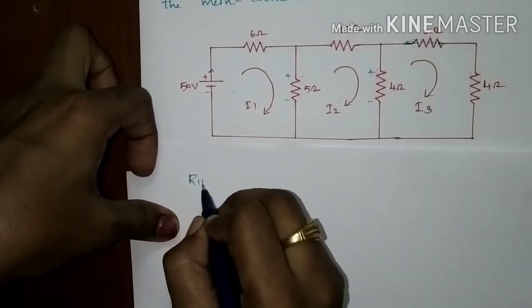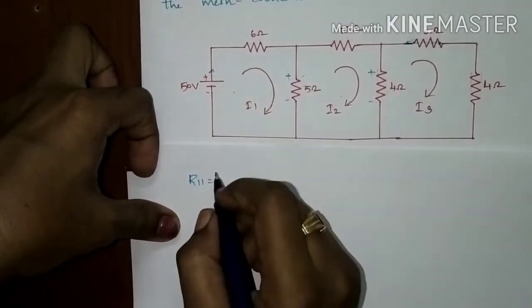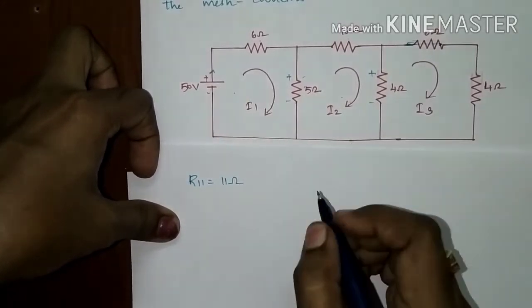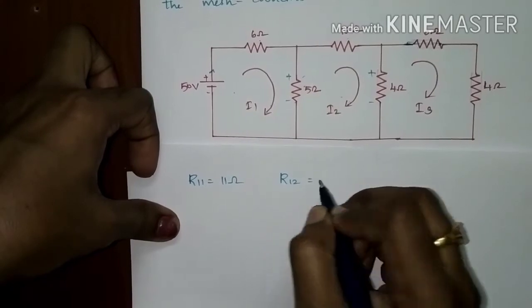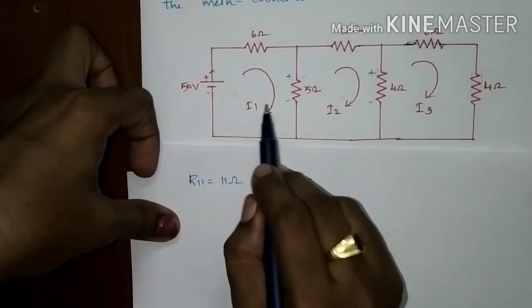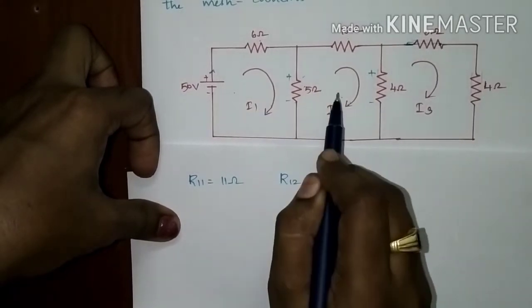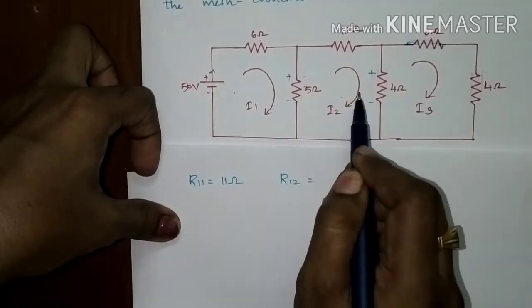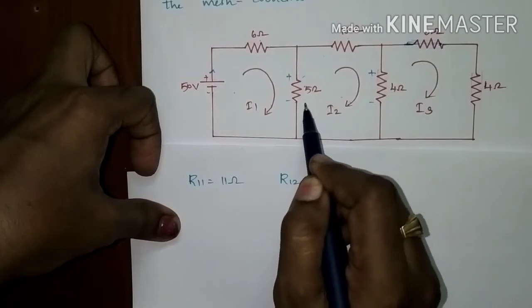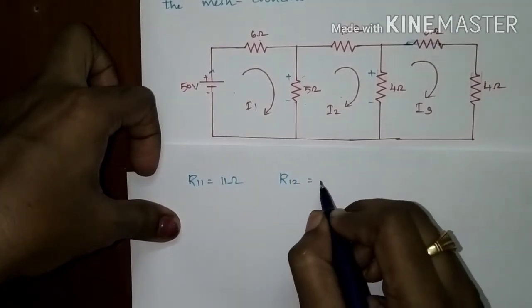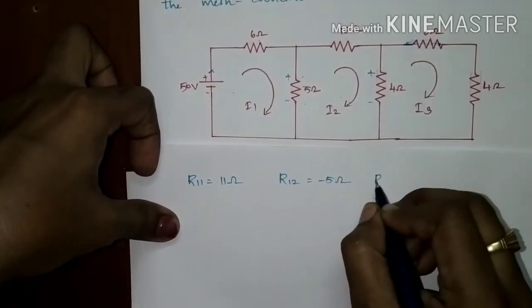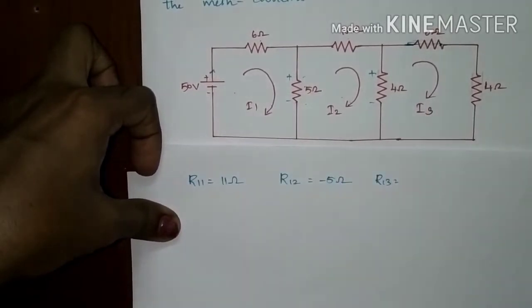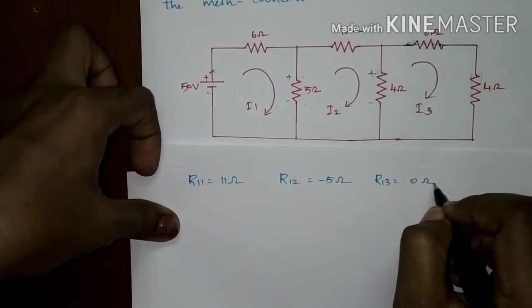The first element R11 is equal to 6 plus 5, which is 11 ohms — it is the self-resistance of the first mesh. R12 is the resistance common to the first mesh and the second mesh, which is 5 ohms. Check the current direction: I1 flows top to bottom and I2 flows bottom to top — they are opposite in direction, so R12 is minus 5 ohms. R13 is the resistance common to the first and third mesh; there is no common resistance, so it is 0 ohms.